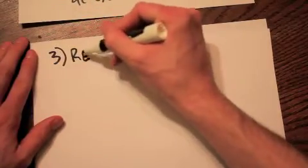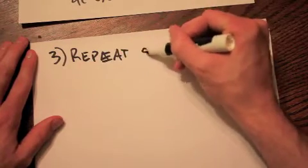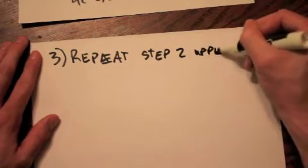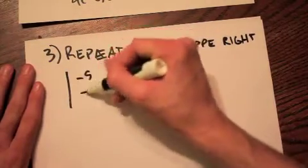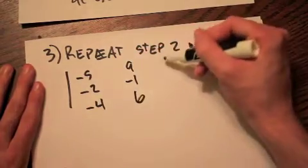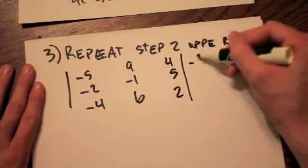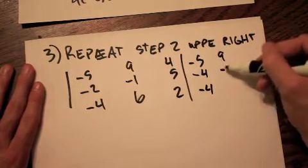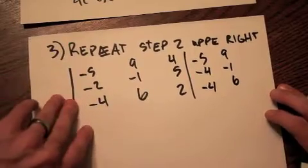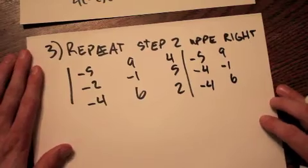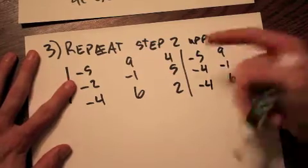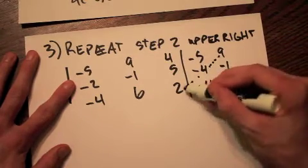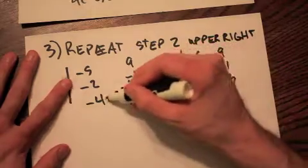Step 3 is just going to be repeat step 2, but now we're going to start in the upper right. You don't have to rewrite your matrix when doing your problem — I'm just going to rewrite it so it's clear what our diagonal is going to be. We're going to start in the upper right-hand corner, so we're going to start here at the 9. Before, we started at the 5. Now we're going to the upper right. We're going to draw our diagonals and we're going to get 3, just like before.